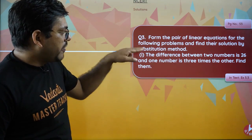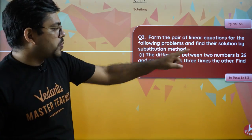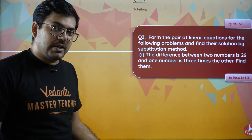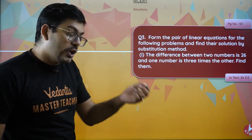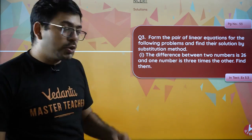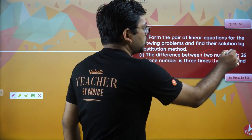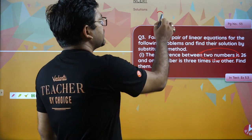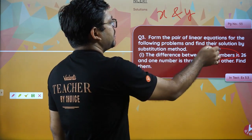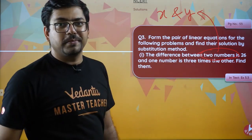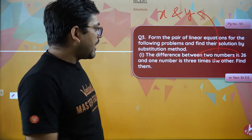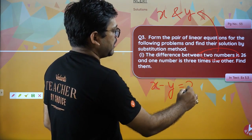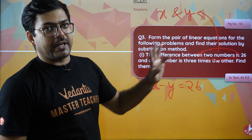What does the question say? The difference between two numbers is 26. I don't know which two numbers these are. So I will let the two numbers be x and y — that is the easiest approach. Let the numbers be x and y. The difference between them, x minus y, equals 26. This is given in the question.